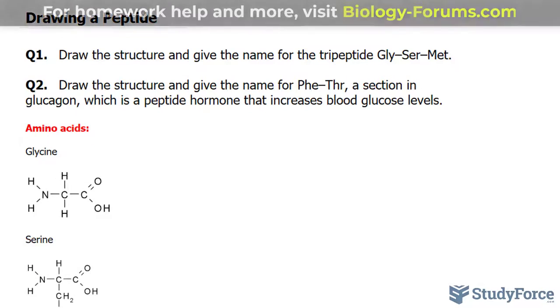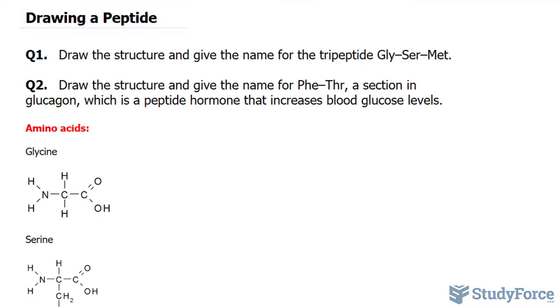Before we begin, a while back we had a video on amidation. Amidation is when an amine containing molecule forms a bond with a carboxylic acid. And because amino acids have a carboxyl and an amine group, it's a perfect example of amidation.